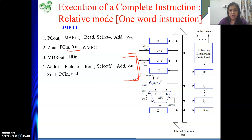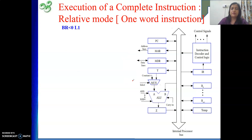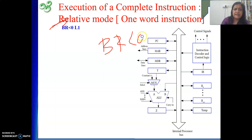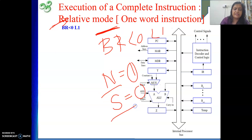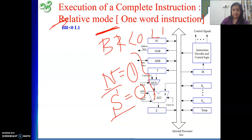Next, another relative mode example: conditional branching. Conditional branching checks the result of the previous instruction. For branch-less-than-zero L1, some instruction precedes this branch. We check that instruction's result. If the result is less than 0 — meaning the result is negative — the N flag (or sign flag) value will be 1. Then we perform the jump. When we are not going to jump to L1 — when the N flag value is 0, meaning the result is positive — we execute the next instruction in sequence. Now we will see how to do it.